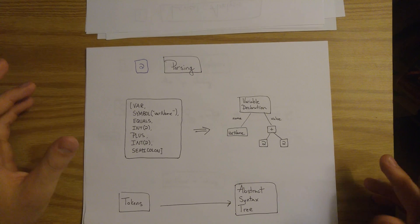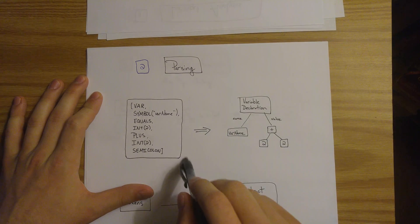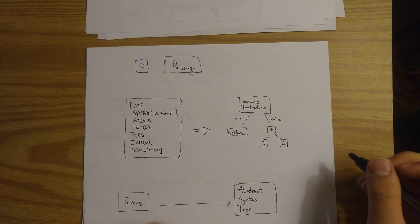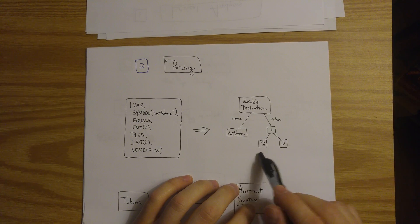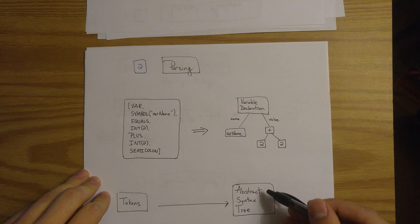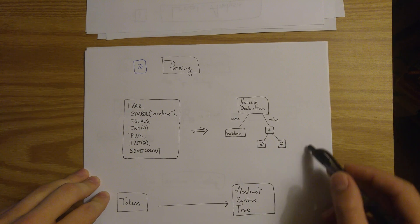So in the next stage, parsing, we take that list of tokens and we try to create a syntactic representation of what is being represented by the program. So here we're taking 2 plus 2 and we're assigning it to a variable var name. So we take these tokens and we can create this abstract syntax tree here.